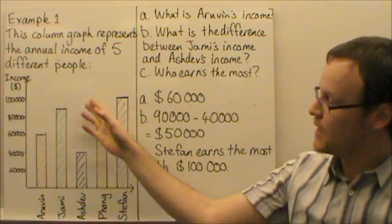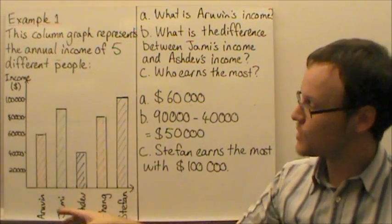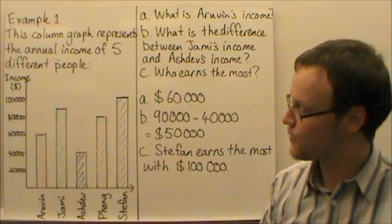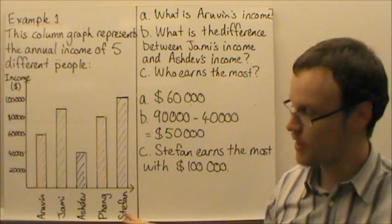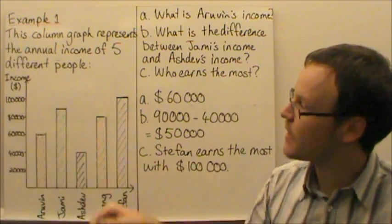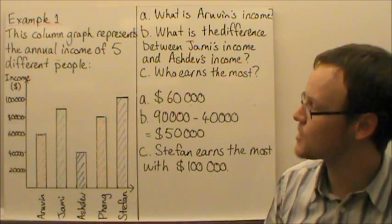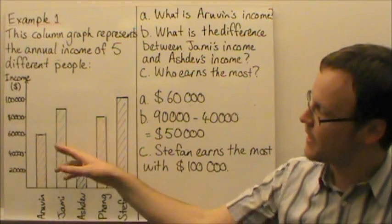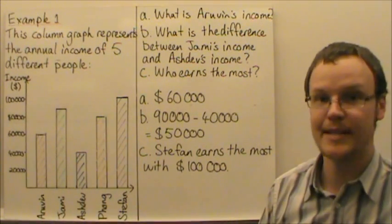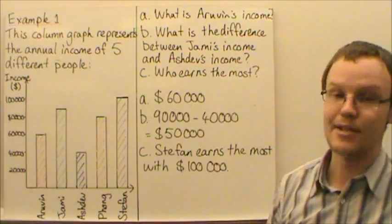A first example, here is a column graph that looks at the annual income of five different people. The five people are written down the bottom and their income, or the income changing up the side. We can very easily compare these incomes to answer the questions.